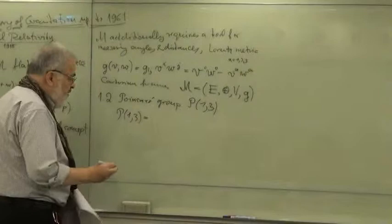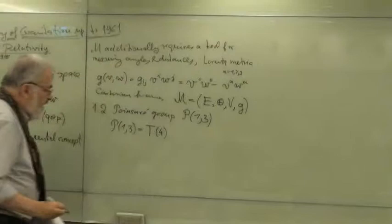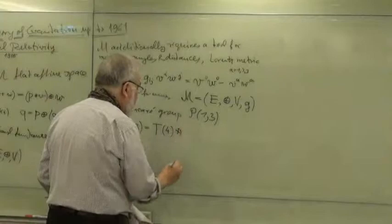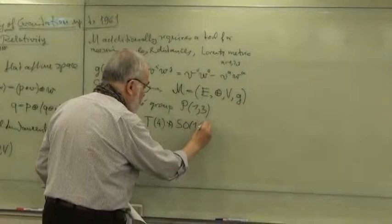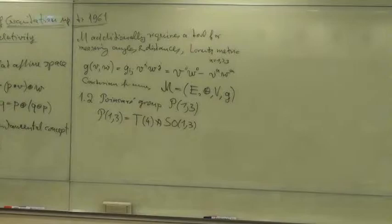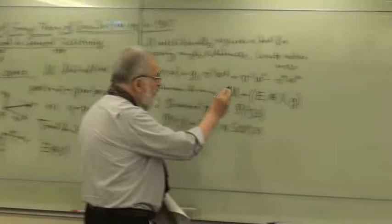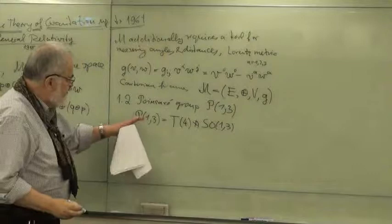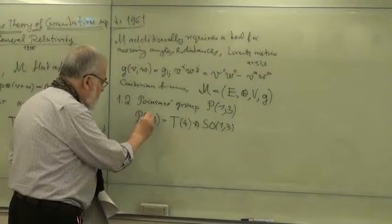P1-3 is the semi-direct product of translations, and these translations go in four dimensions, multiplied semi-directly with the orthogonal group SO(1,3). This 1-3, for students, that's the metric. Here we have a plus sign and here three minus signs, so that's the signature which is meant by this 1-3.